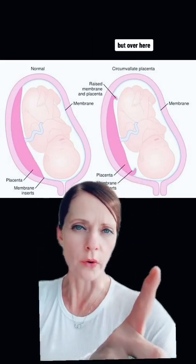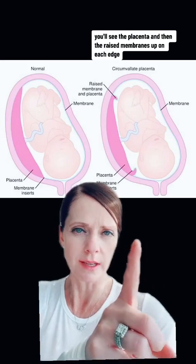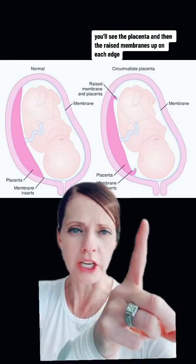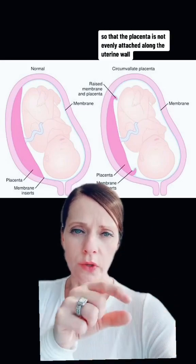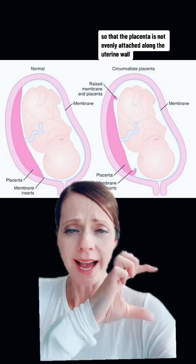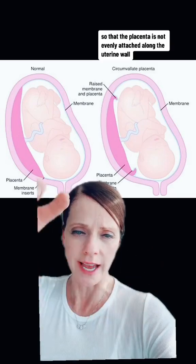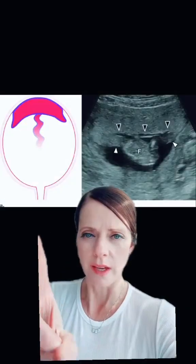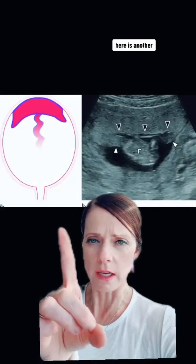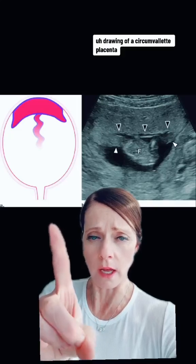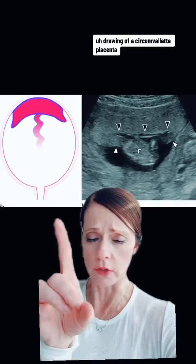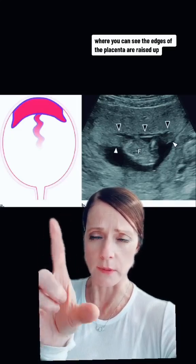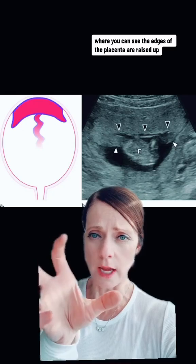Over here, you'll see the placenta and then the raised membranes up on each edge, so that the placenta is not evenly attached along the uterine wall. Here is another drawing of a circumvallate placenta where you can see the edges of the placenta are raised up.